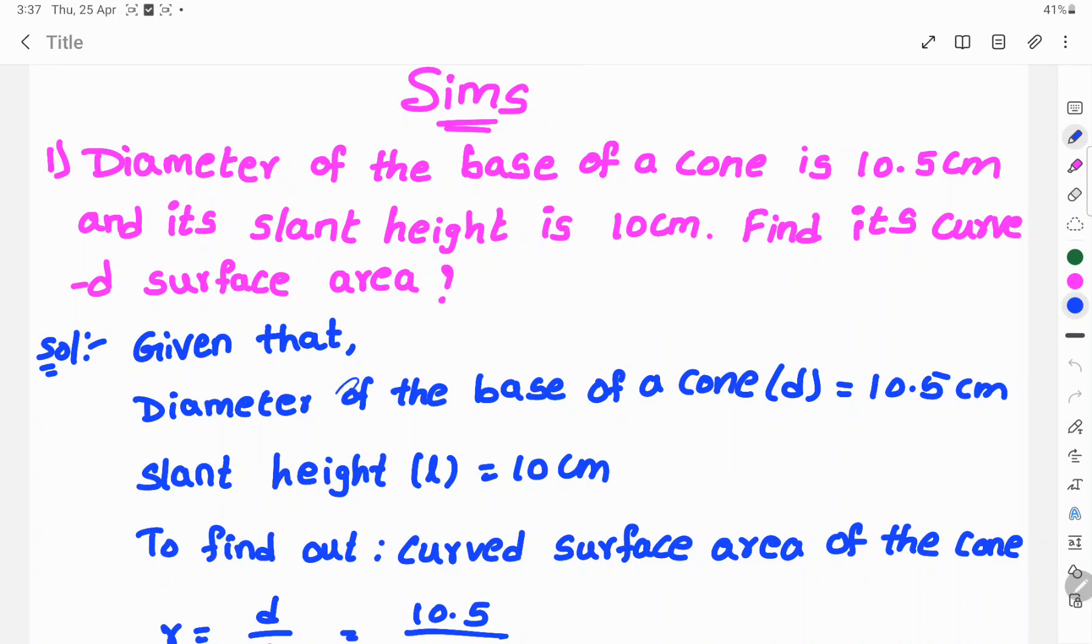Let's see the solution. Given that diameter of the base of the cone is 10.5 cm and slant height L is 10 cm, to find out curved surface area of the cone.